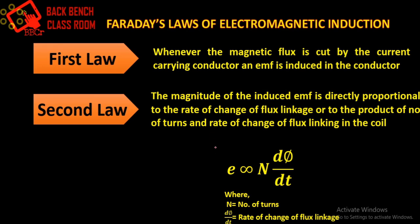So, e is proportional to N times dφ/dt, where N is the number of turns and dφ/dt is the rate of change of flux.